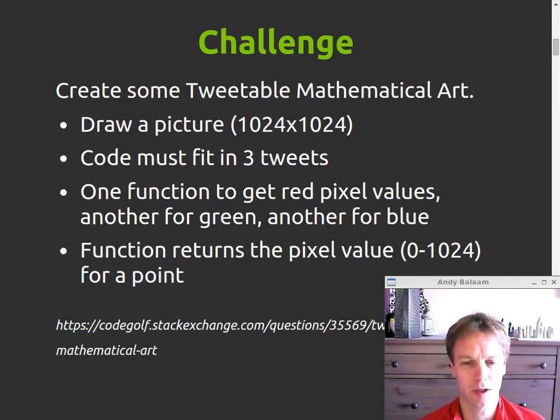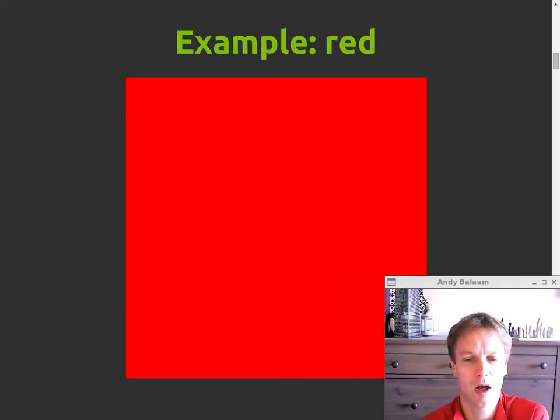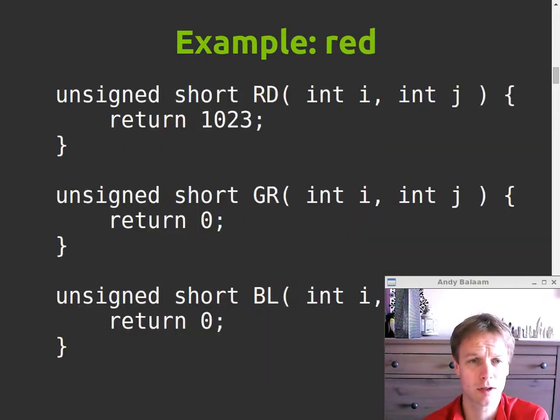And each function just returns a value between 0 and 1024 for how much red, green or blue at that pixel. So the functions get called repeatedly for every point. For example, if we wanted to just draw a beautiful red square, our functions would look like this. Our red function would return 1023, which is the highest possible red value. So the red function would return that and the green and blue functions would return 0 and that would make it red square.